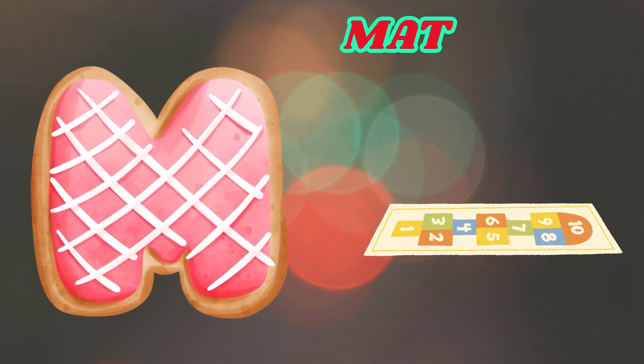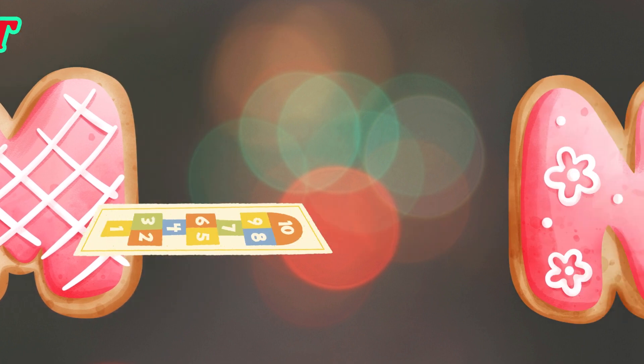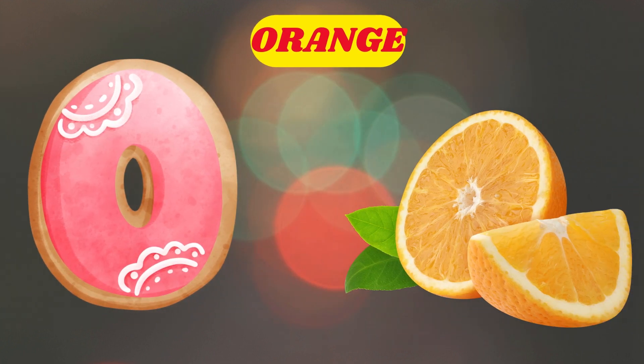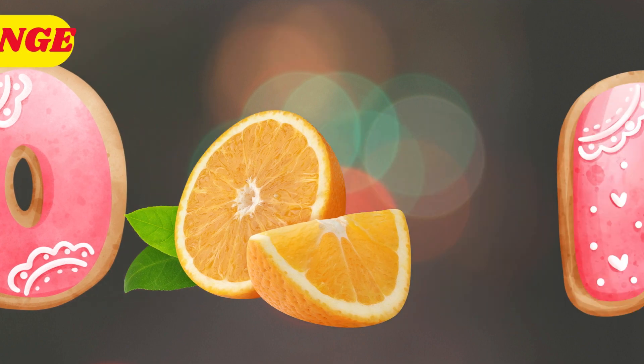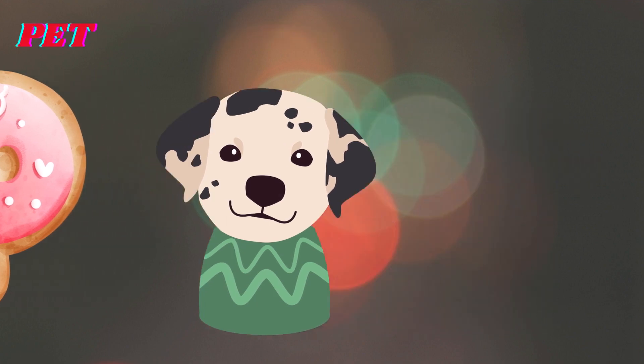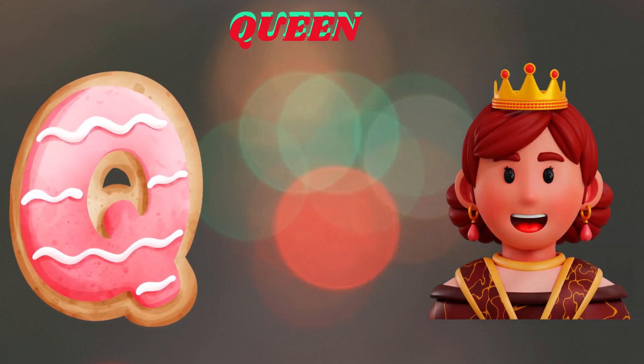M is for Mat. M-M-Mat. N is for Net. N-N-Net. O is for Orange. O-O-Orange. P is for Pet. P-P-Pet.